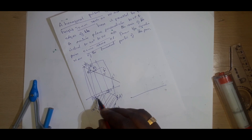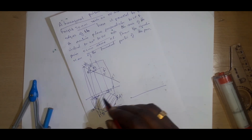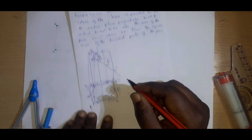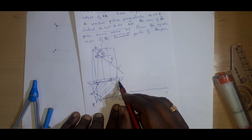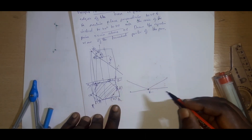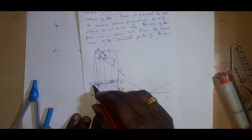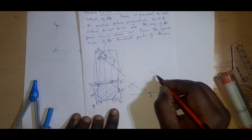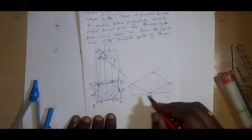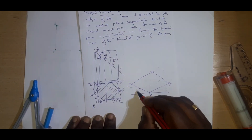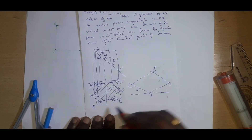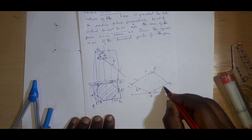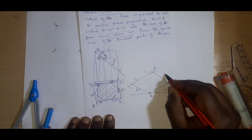Now we can draw the isometric views. Here we can put this in the box. We can name it as P, Q, R, S — here is the shortest height. In the previous problem we took Q; for a change in this problem we can take R here. This is R, with 30 degrees on both lines. From R, we measure the length RS and mark S, and from R to Q we mark Q. Now we can find the midpoints: between R and Q, point D is available; between P and Q, points B and C are available. This is B, this is C, this is E, and this is F.